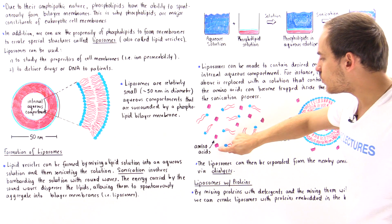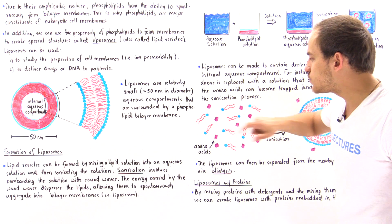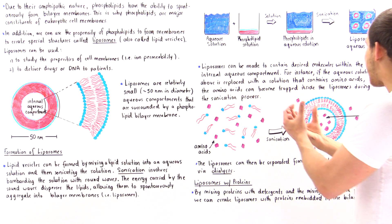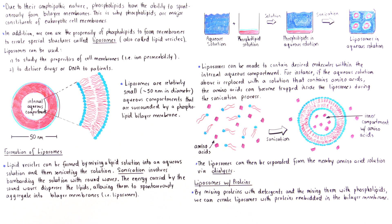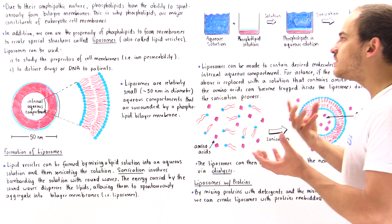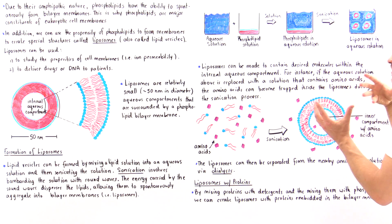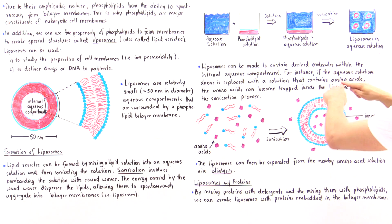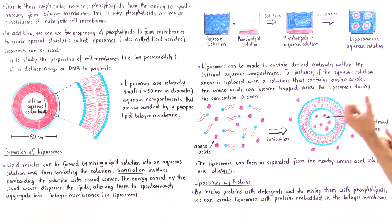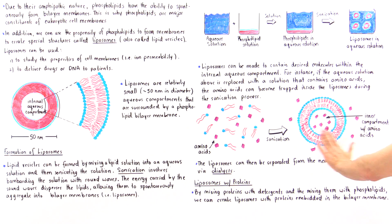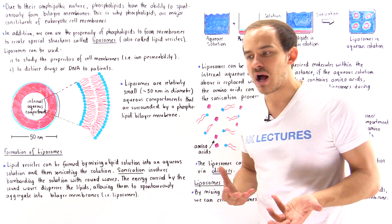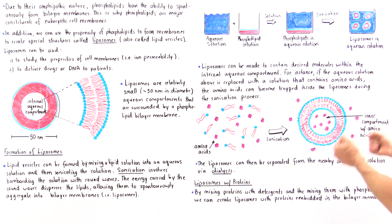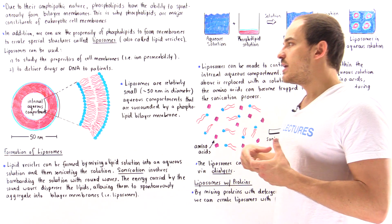We have the individual amino acids shown in purple and the individual phospholipid molecules, which as a result of the sound wave bombardment disperse and form the bilayer membrane, as shown in this diagram. Some amino acids will randomly end up within the internal aqueous compartment as the liposomes form, and others will end up on the outside. To separate the external amino acids from the liposomes, we undergo a purification process such as dialysis or gel filtration chromatography.